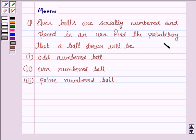Find the probability that a ball drawn will be an odd numbered ball, even numbered ball, prime numbered ball. So let's now move on to the solution.